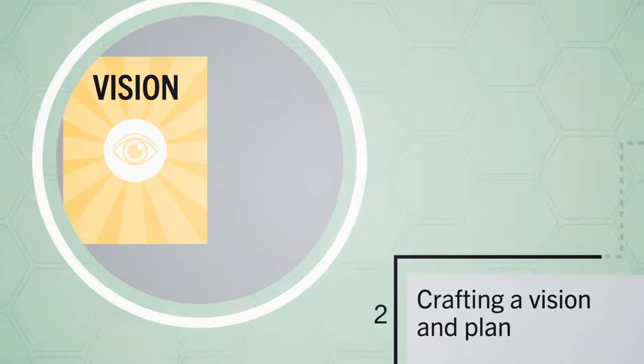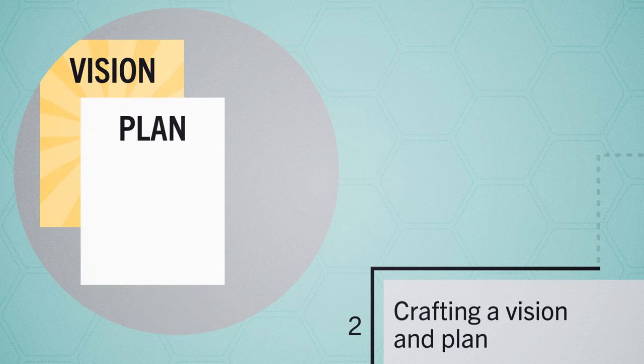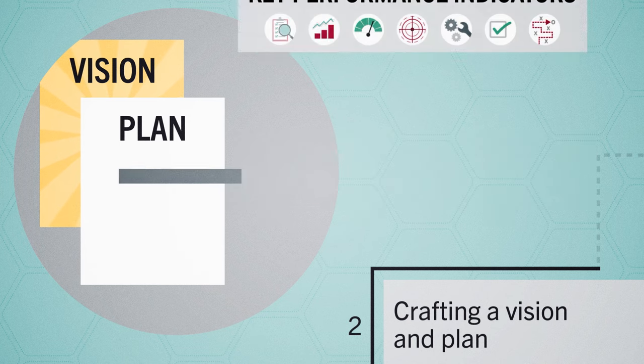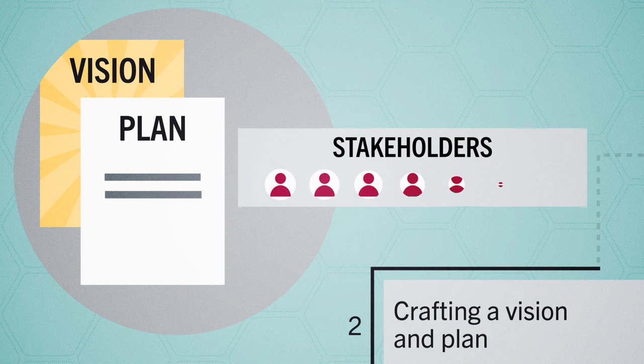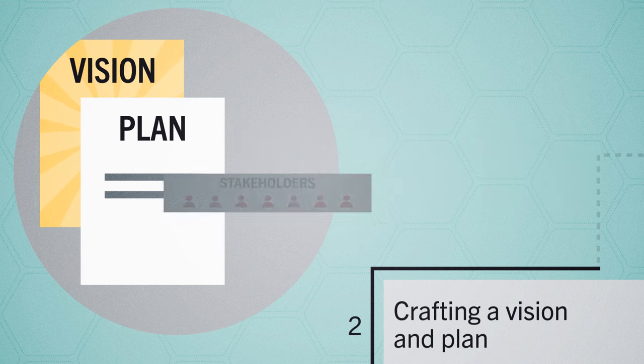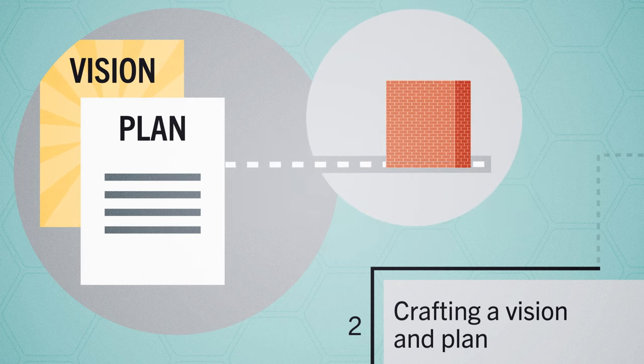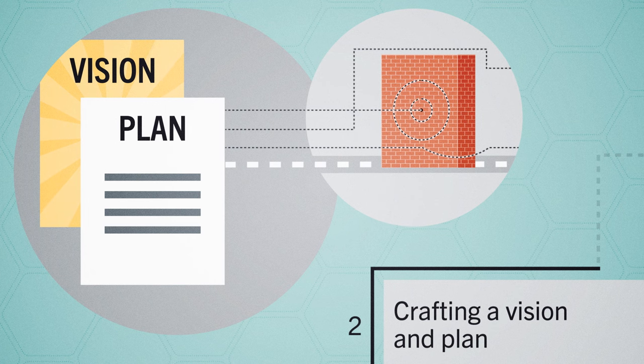Step two is crafting a vision and plan for change. The plan should detail strategic goals the organization should work toward, key performance indicators for measuring success, stakeholders responsible for implementation and sign-off, and project scope. The plan should also account for obstacles that could arise during implementation that would require agility and flexibility to overcome.